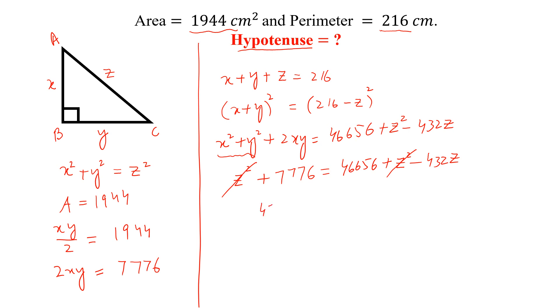So z squared is cancelled with the z squared, and 432z is equal to 46,656 minus 7776. And 432z is equal to 38,880.